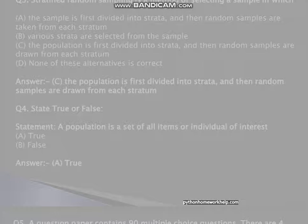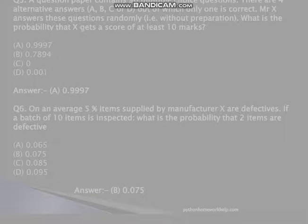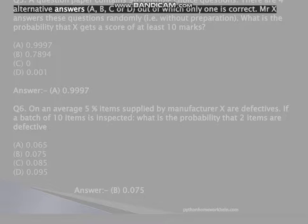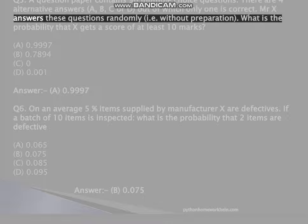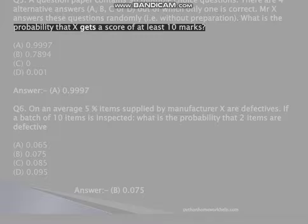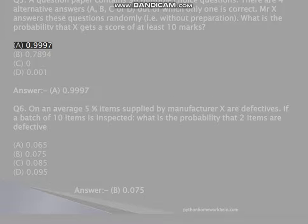Pythonhomeworkhelp.com. Q5. A question paper contains 90 multiple-choice questions. There are four alternative answers, A, B, C, or D, out of which only one is correct. Mr. X answers these questions randomly, i.e. without preparation. What is the probability that X gets a score of at least 10 marks? A, 0.9997, B, 0.7894, C, 0, D, 0.001. Answer: A, 0.9997.